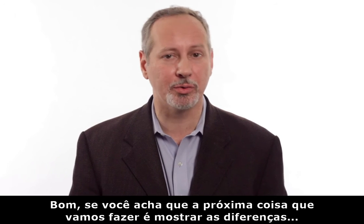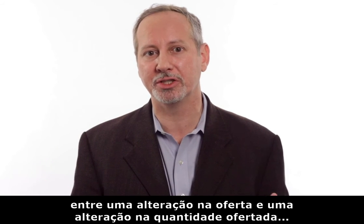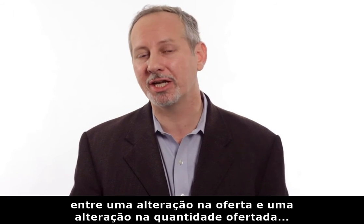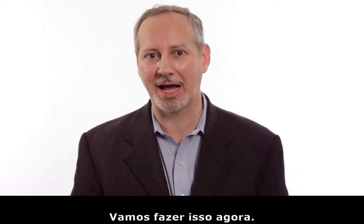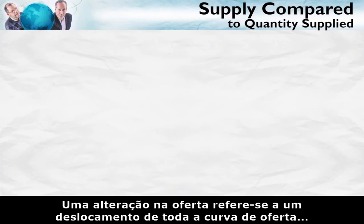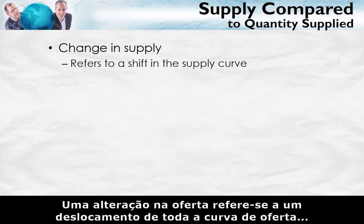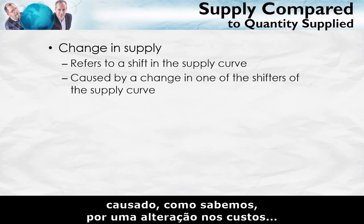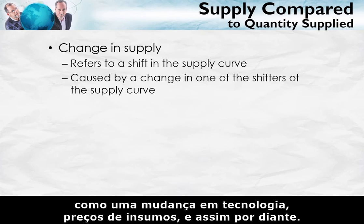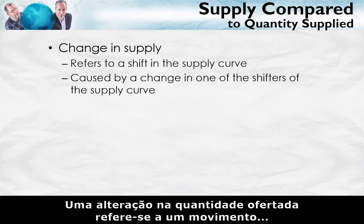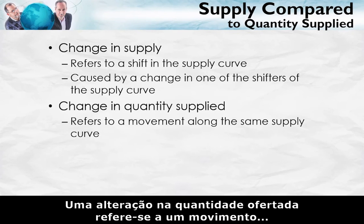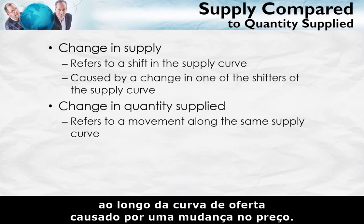If you guessed that the next thing we're going to do is show the difference between a change in supply and a change in the quantity supplied, you'd be right. A change in supply refers to a shift in the entire supply curve, caused by a change in costs, such as a change in technology or input prices, and so forth. A change in the quantity supplied refers to a movement along a fixed supply curve, caused by a change in the price.